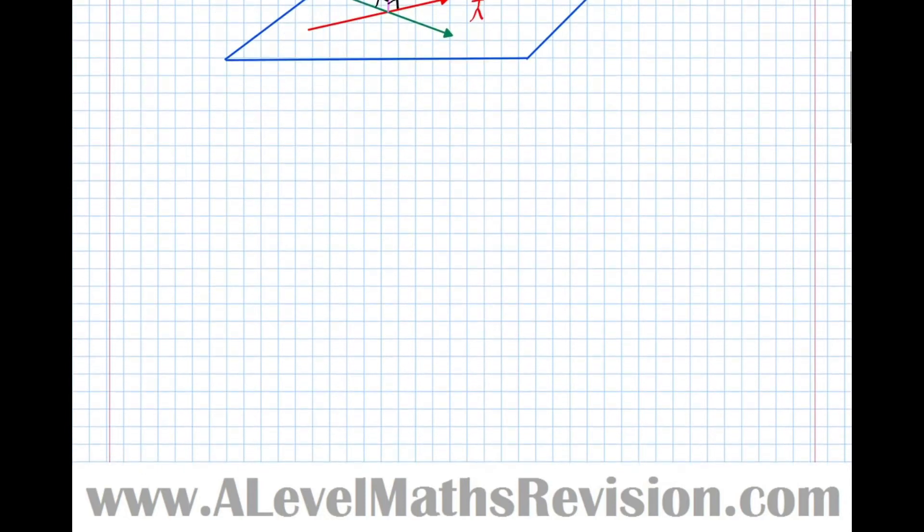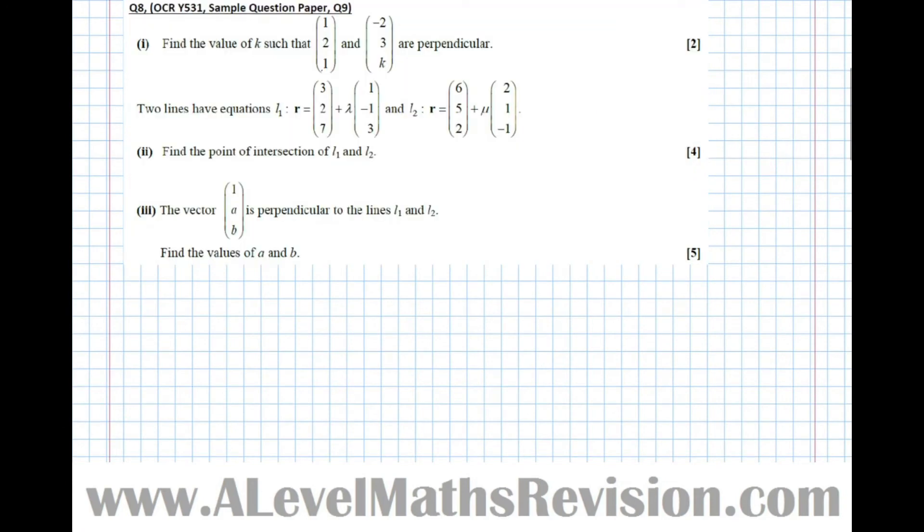Let's have a look at an exam question. A warning: in this question, the challenge is deciding when it's appropriate to use the vector product, when to use a scalar product, or when to use neither. Part one: Find the value of k, such that 1, 2, 1, and minus 2, 3k are perpendicular. It's only worth two marks. In this case, it's more appropriate to use the scalar product, because the scalar product of two perpendicular vectors is equal to zero.